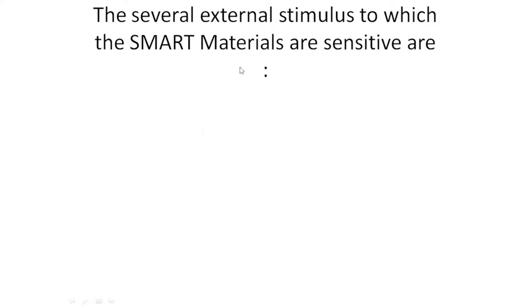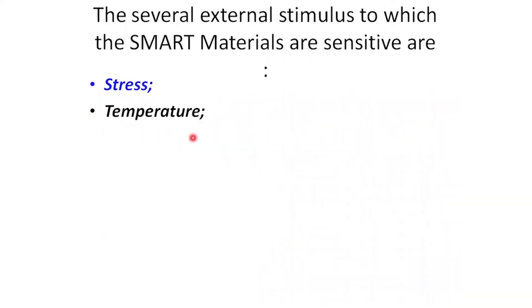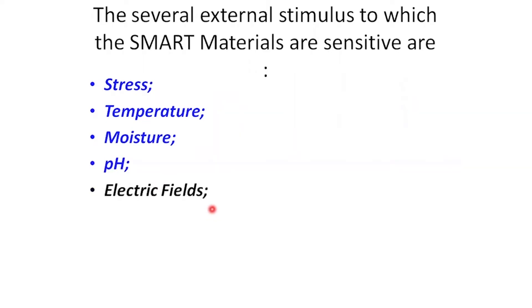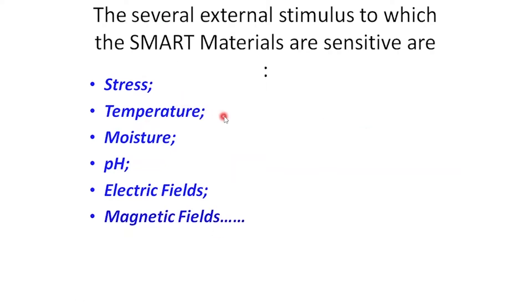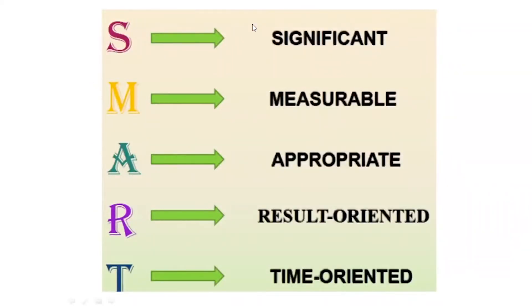Several external stimuli to which smart materials are sensitive include stress, temperature, moisture, pH changes, electric fields, and magnetic fields. Whatever material is classified as a smart material will react with respect to each of these stimuli.